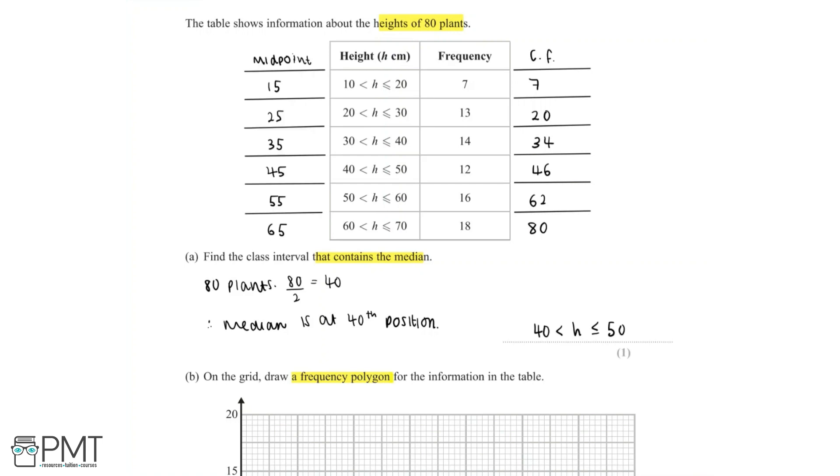The midpoint of the first interval would be 15. The midpoint of the second interval would be 25, then 35, 45, 55 and 65. We'll need this when we plot the information in our frequency polygon.